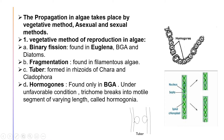The second vegetative method is fragmentation, found in filamentous algae such as Spirogyra. Here the septa are formed and the cell divides, with one part separating from the other. This type of division is known as fragmentation. The third type of vegetative method is tuber formation, found in the rhizoids of Chara and Cladophora.